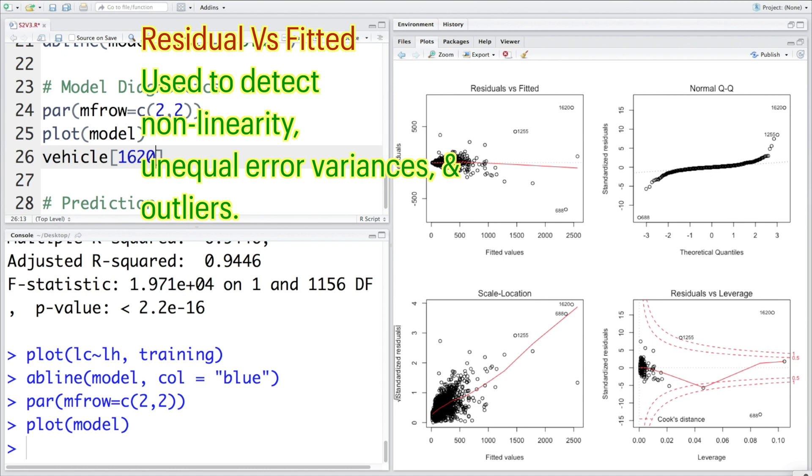With real data sets, we may not get a situation where we get a perfect residual versus fitted plot, but it gives some indication if the model can be further improved.